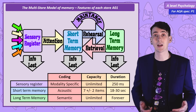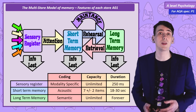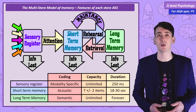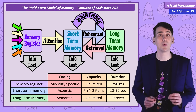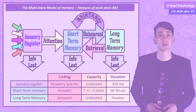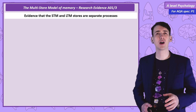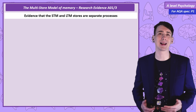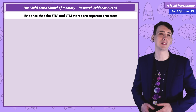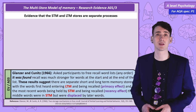In the evaluations, I want to cover the research that revealed all of the features of the multi-store model of memory and how we could evaluate that research. To start with, a simple piece of research by Glanzer in 1966 showing the primacy-recency effect.